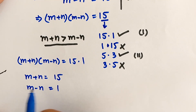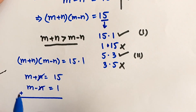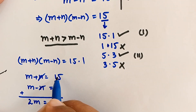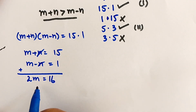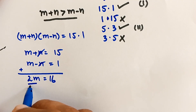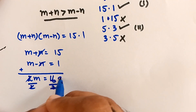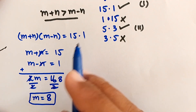To find the value of m, we add these two equations. The n terms cancel each other, giving us m plus m equals 2m, and 15 plus 1 equals 16. So 2m equals 16. Dividing both sides by 2, m is equal to 8.